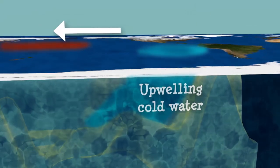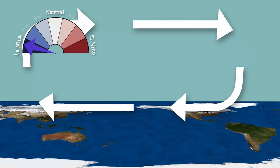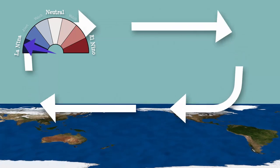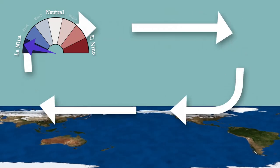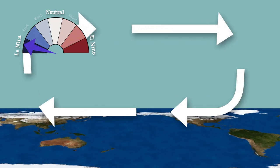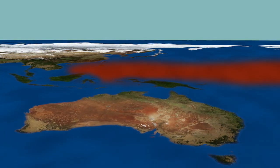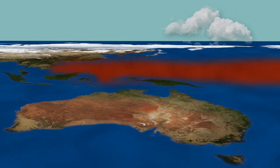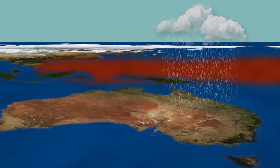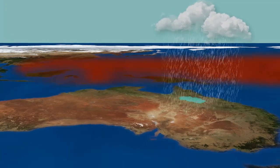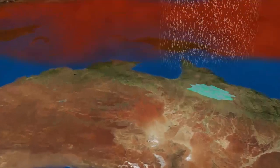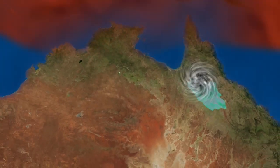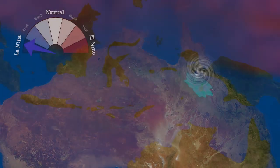Like an athlete pumping iron, the La Niña is the muscled-up version of the neutral phase. Trade winds become strong, and more warm water builds up in the west Pacific. The excess of warm water increases evaporation and precipitation, causing floods and forming tropical cyclones off the northeastern Australian coast.